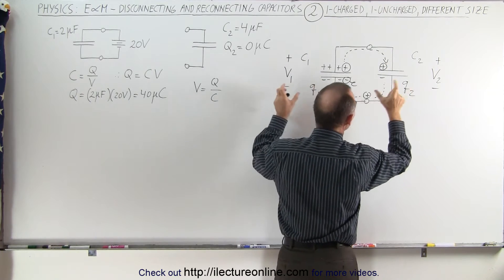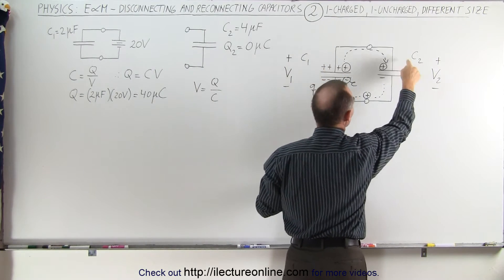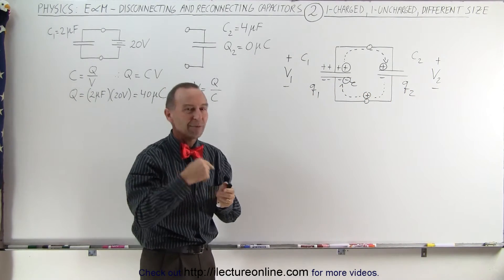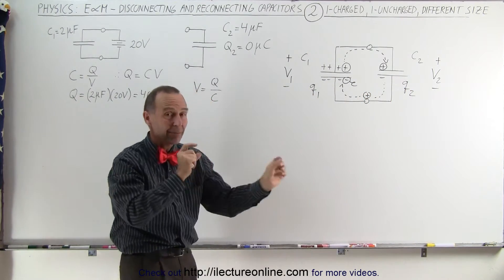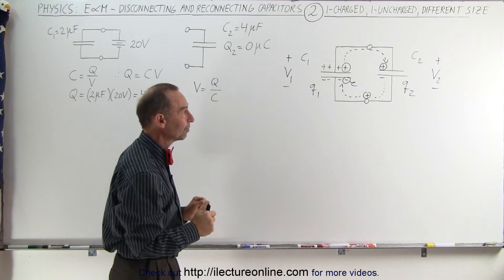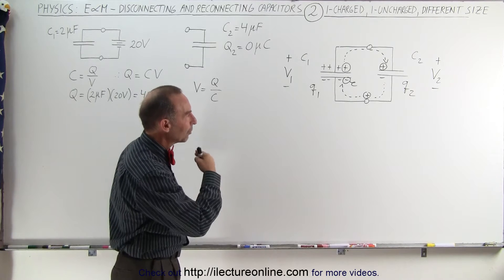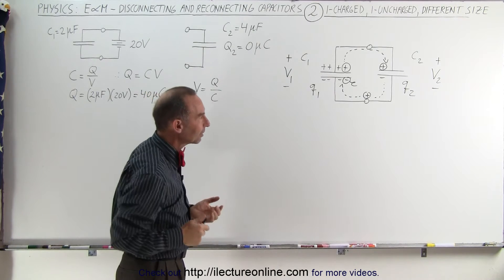But since they're no longer the same size, C1 is not equal to C2, the amount of charge that goes across will now not be the same as before. You will not end up with the same amount of charge on both capacitors. So how much charge will you end up with on the first capacitor and how much charge will we end up with on the second capacitor?